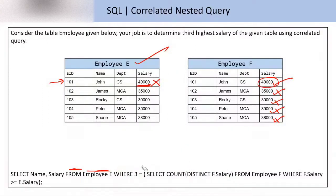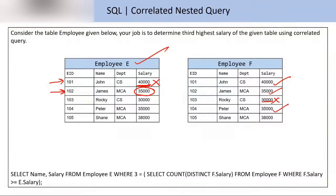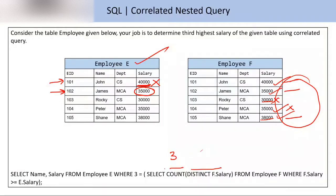Now the second tuple of the e table gets selected. I will compare this salary (35,000) with all salaries of f, checking that f.salary should be greater than or equal to e.salary. Is 40,000 greater than 35,000? Yes — select. Is 35,000 equal to 35,000? Yes — select. Is 30,000 greater than 35,000? No. Is 38,000 greater than 35,000? Yes — select. We get four tuples. Applying COUNT(DISTINCT f.salary): 40,000 once, 35,000 once (duplicate removed), 38,000 once — count is 3. The output of the inner query is 3.